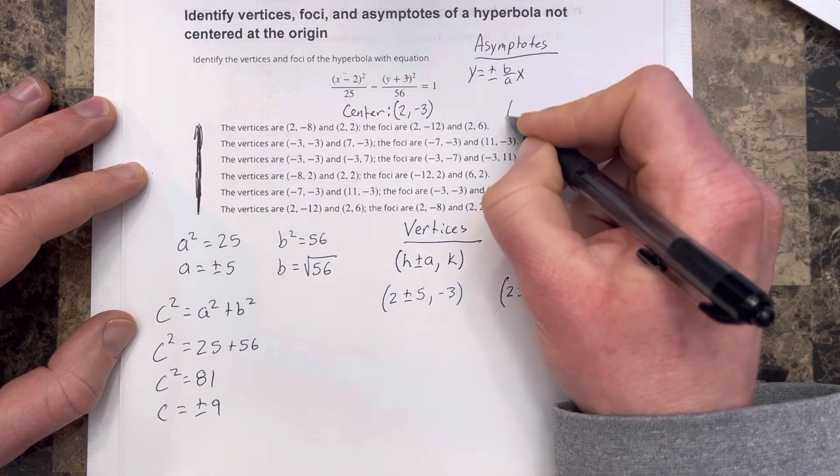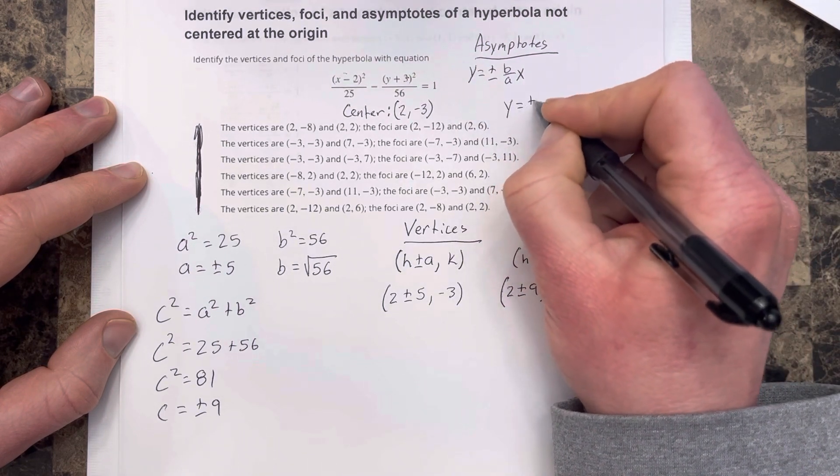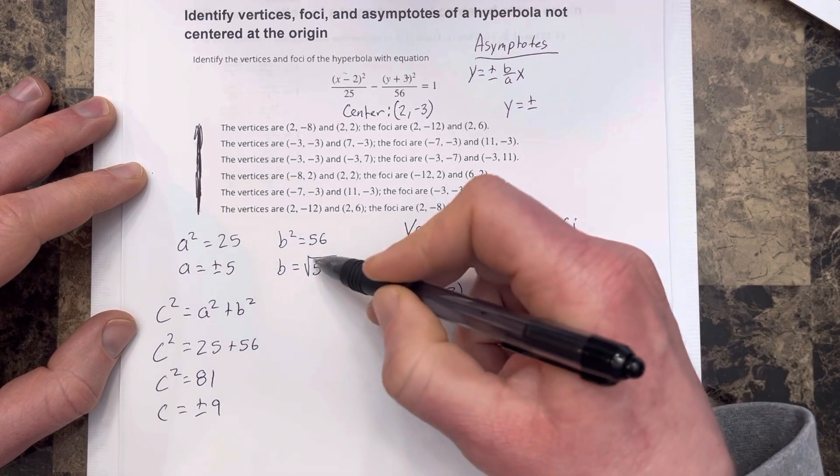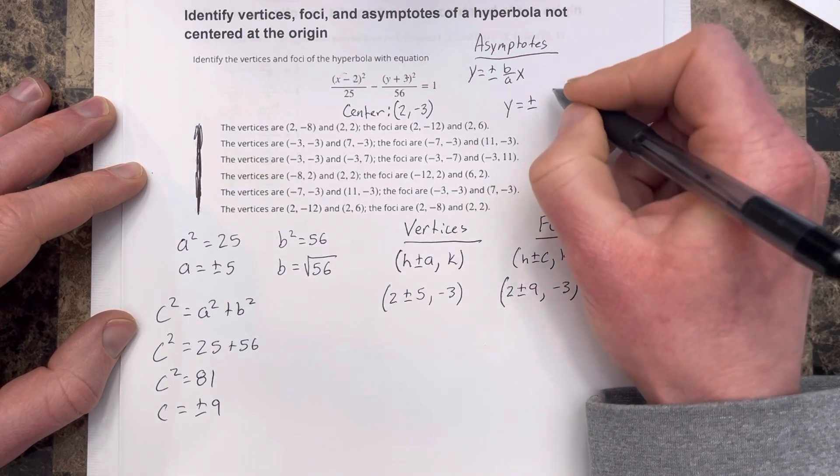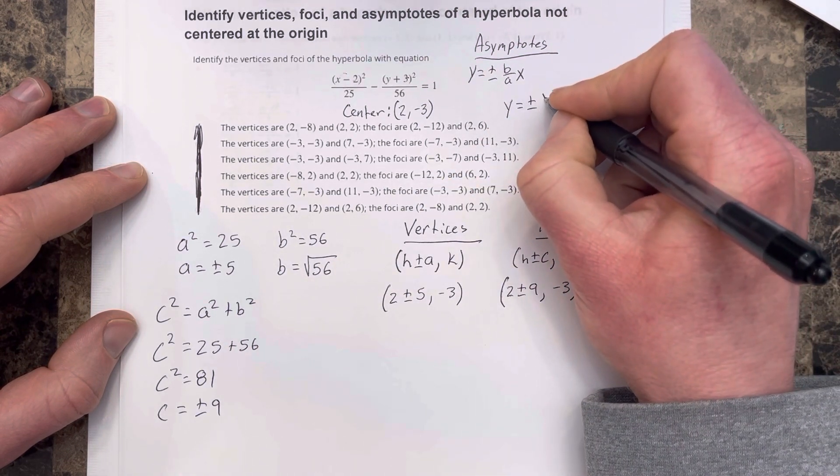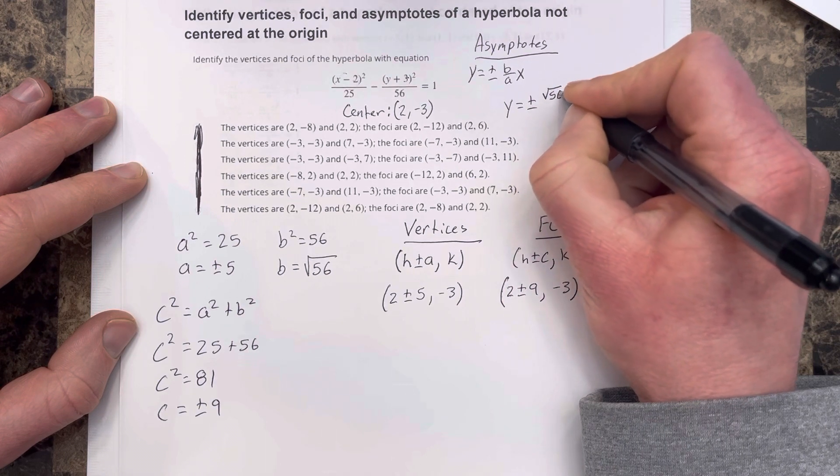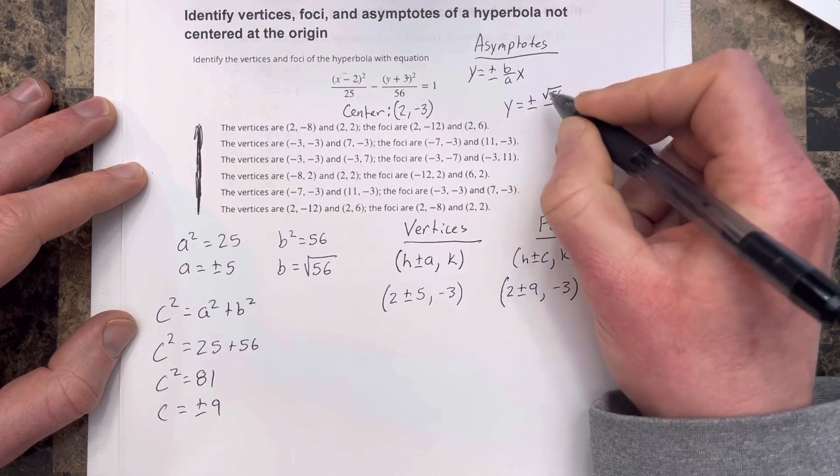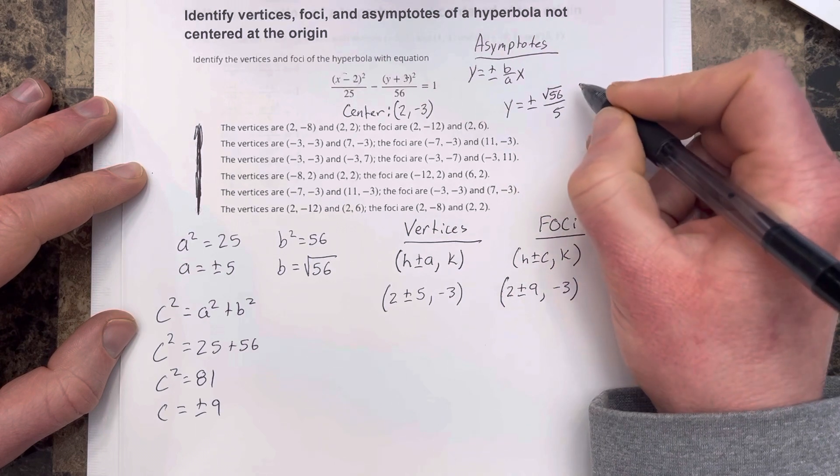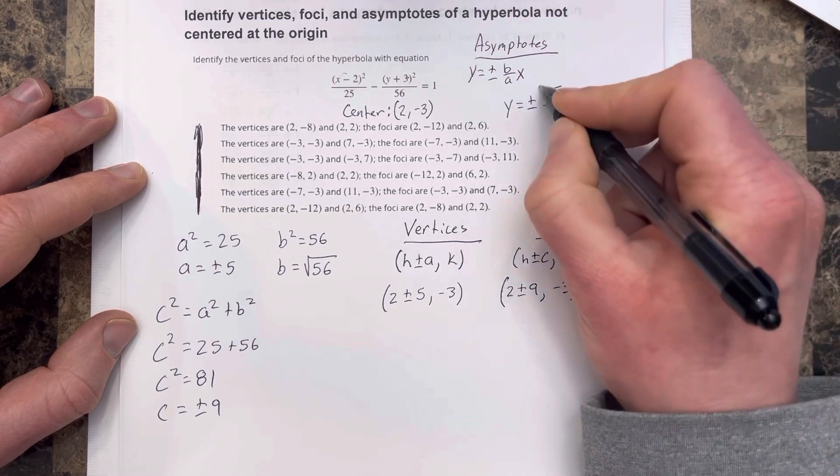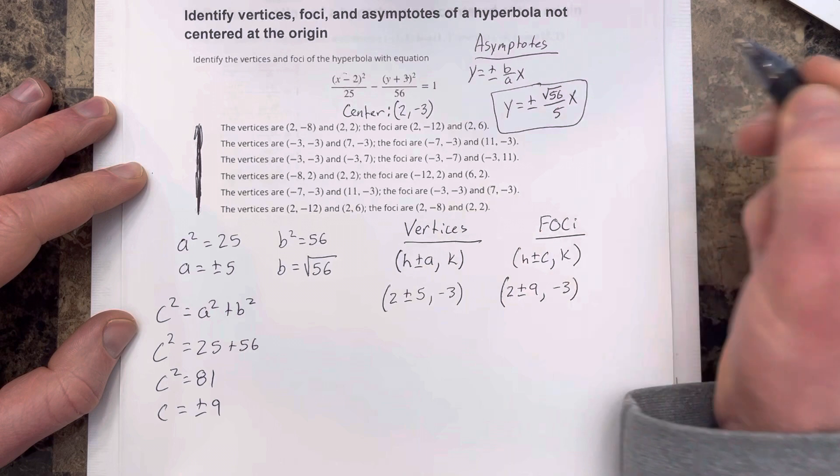And then for our asymptotes, we're going to have y equals plus minus b, which is root 56, over a, which is 5, times x. So these are the asymptotes.